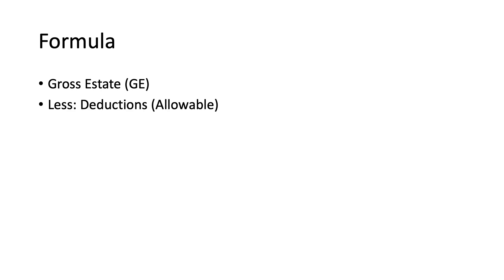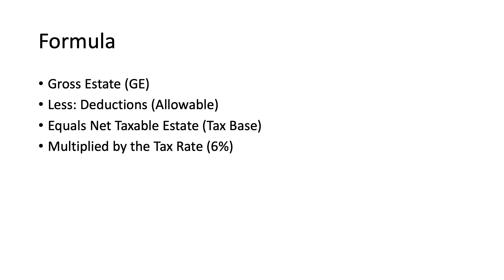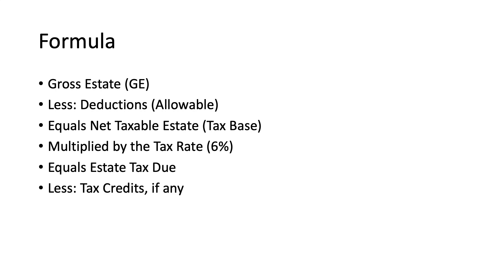The formula for computing gross estate is: start with the gross estate, which is the value of the properties of the decedent; deduct allowable deductions in accordance with law; then you arrive at the net taxable estate, which is the tax base. Under the TRAIN law, the tax rate is 6%. Multiply net taxable estate by the tax rate to get the estate tax. You can deduct tax credits if any to lower your estate tax liability, arriving at the estate tax payable.